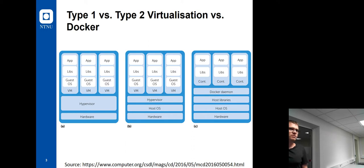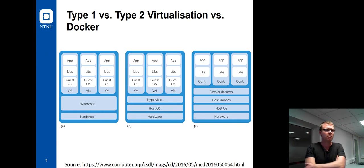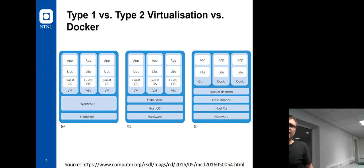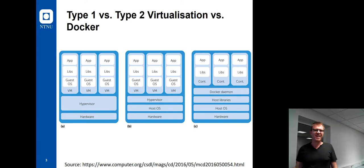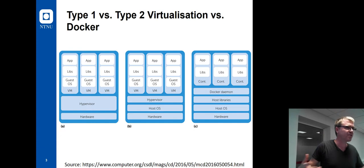What are problems with type 2 virtualization? You have to share resources with a primary OS — there's a conflict if you run something else alongside the virtual machine. In VirtualBox, if there's load on your machine already, starting VirtualBox is not a clever idea. There's a lot of additional abstraction because you have an operating system inside an operating system. Even on a powerful machine it can be quite slow.